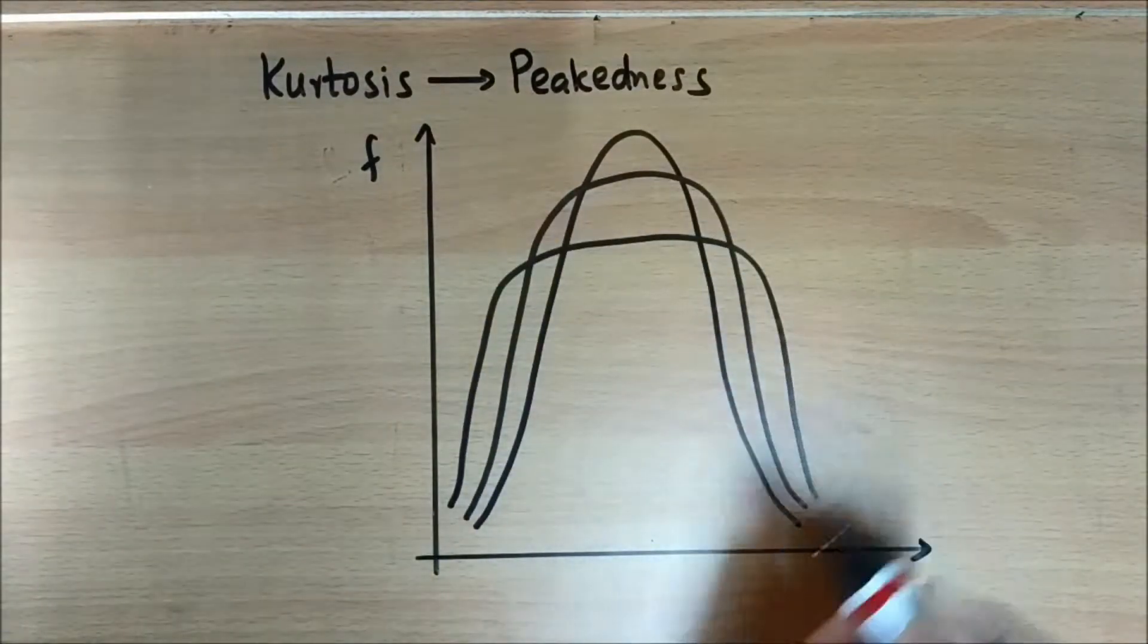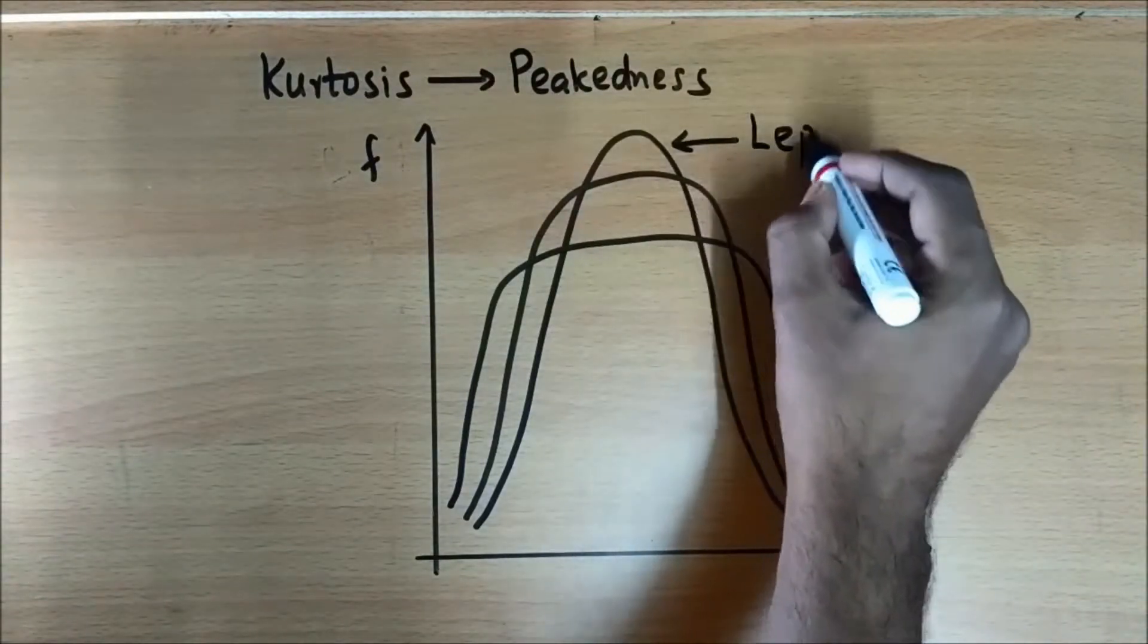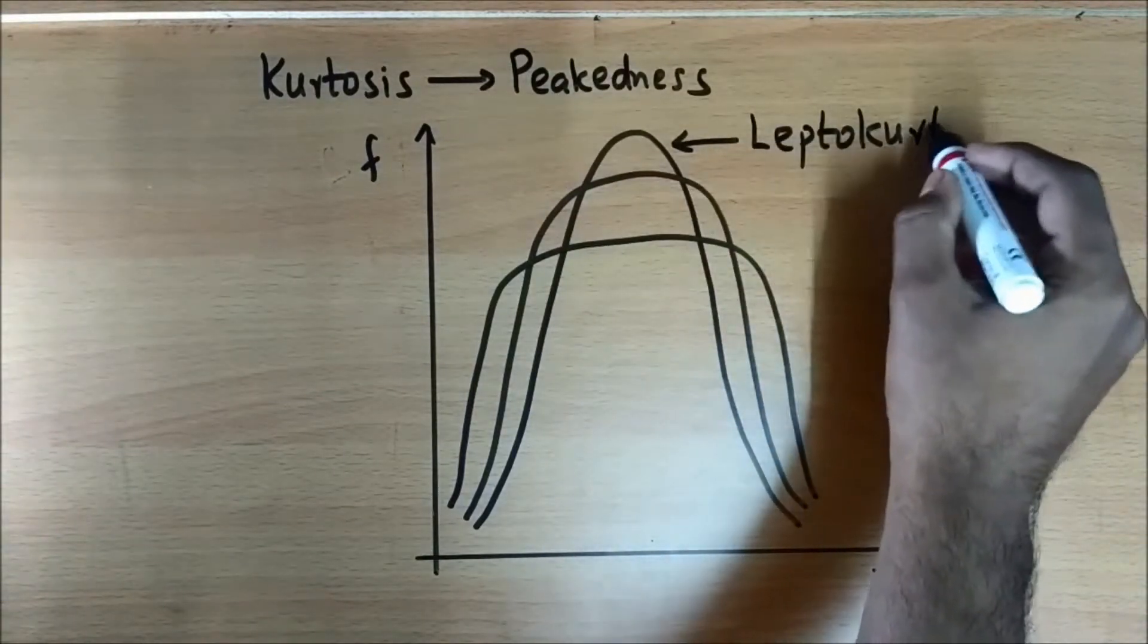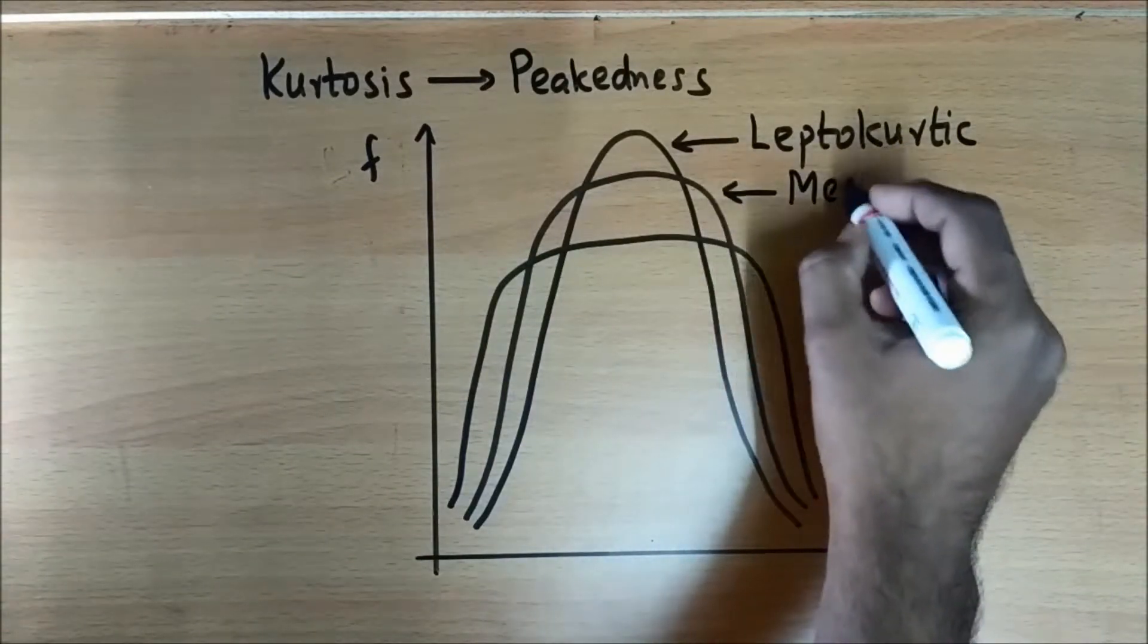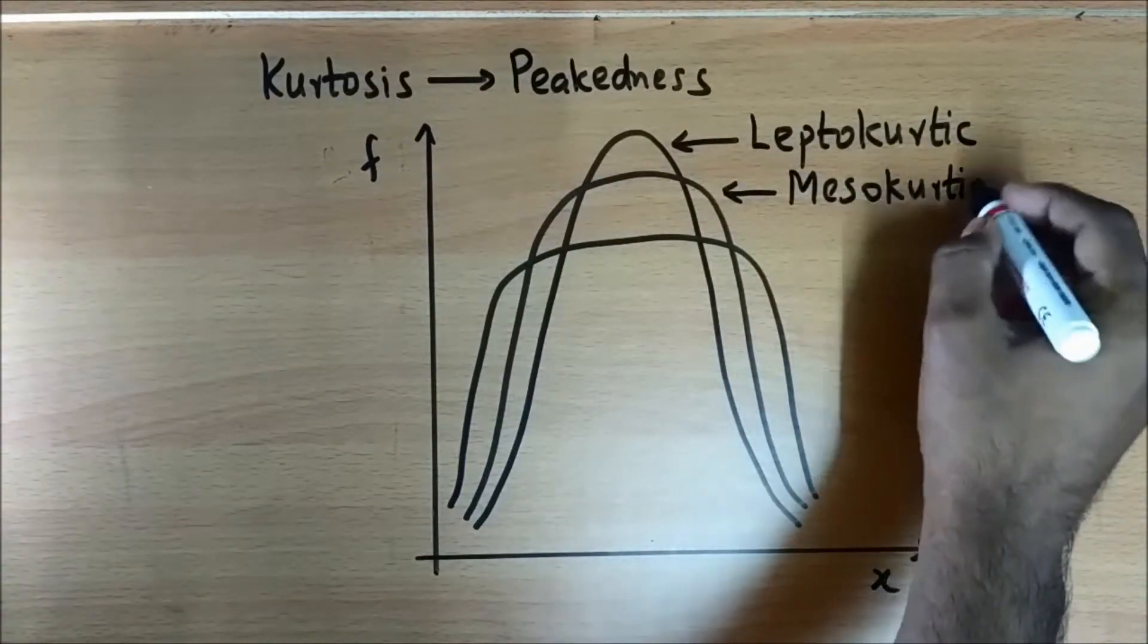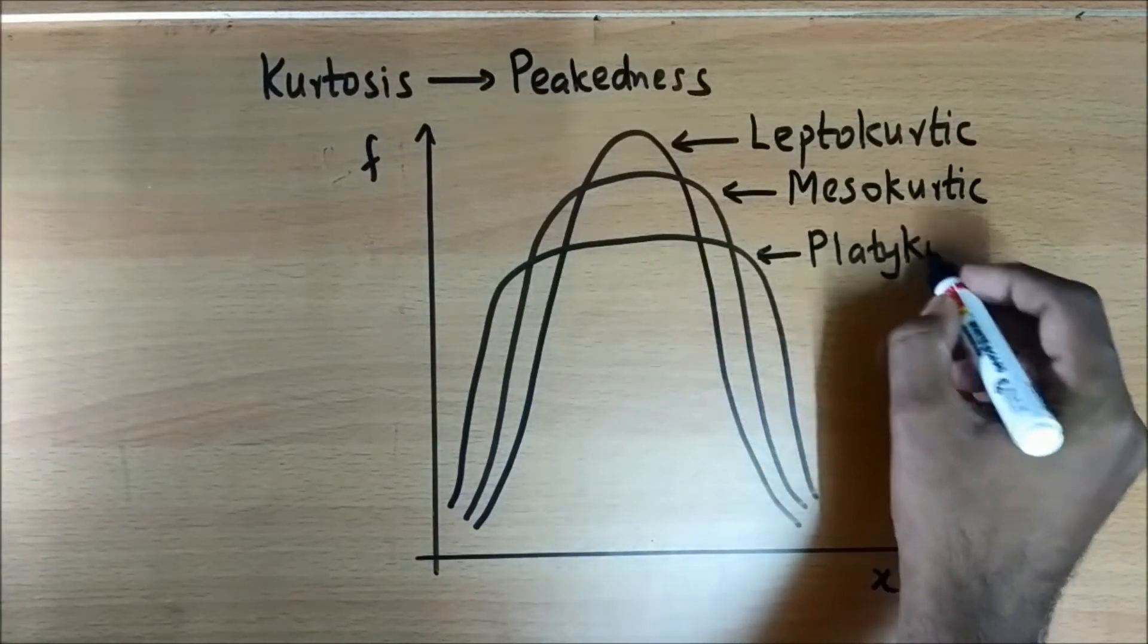So the sharpest one, the one there right at the top, that is the narrowest one, is leptocurtic. Next is the mesocurtic distribution, and the last one is the platycurtic distribution.